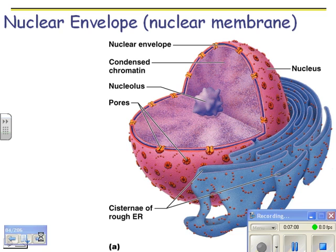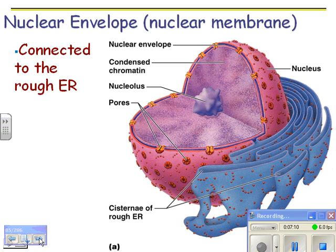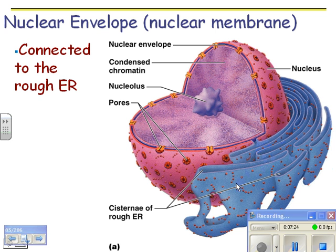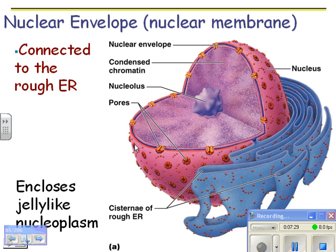The nuclear envelope is connected to the rough endoplasmic reticulum. The pink stuff here is the nuclear membrane, and here's a pore where things can go through. This is actually the endoplasmic reticulum connected right to the outer nuclear membrane, and the dots on it are ribosomes.